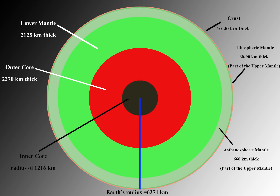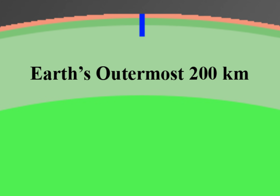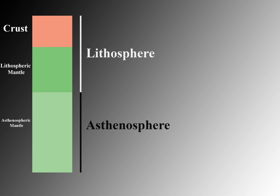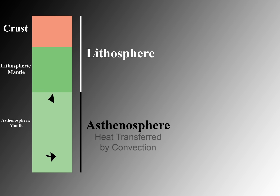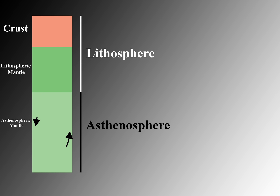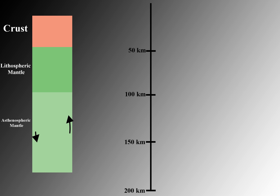To answer this question, we need to think about the outermost 200 kilometers of the earth — this is the only part where the mantle can melt. Geoscientists see this zone as upper lithospheric mantle and crust, underlain by asthenospheric mantle. The lithosphere is cooler and stronger; because it is more rigid, it cannot convect and only cools by conduction. The asthenosphere is hotter and weaker, able to convect, bringing earth's interior heat to the base of the lithosphere.